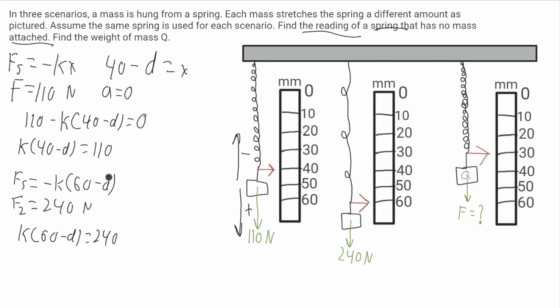I'll solve for k and I'll get k is equal to 110 over 40 minus d for scenario one. These springs are the same so they're going to have the same force constant. So I'll get 110 over 40 minus d is equal to 240 over 60 minus d.